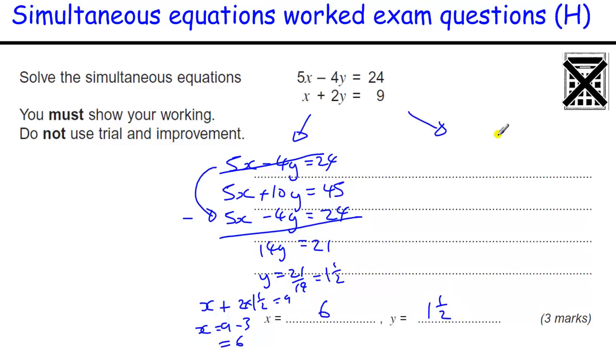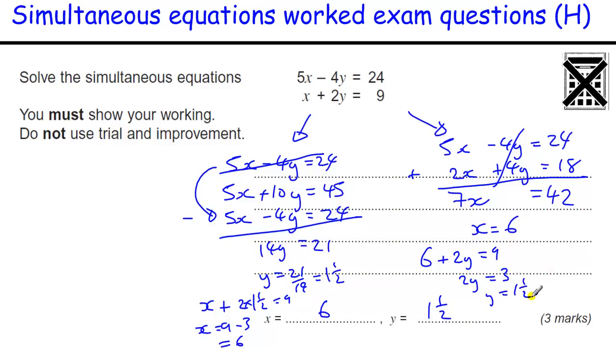The other way you could do it is to double the second equation and add them. So we've got 5x minus 4y equals 24. Double the second equation gives me 2x plus 4y equals 18. This time, because the signs are different on the y, if I add them, I get 7x equals 42. So x must be 6. It's possibly the easier way around. And then using that 6 plus 2y equals 9, so 2y equals 3, so y equals 1.5. Either way is fine. These are grade B questions.